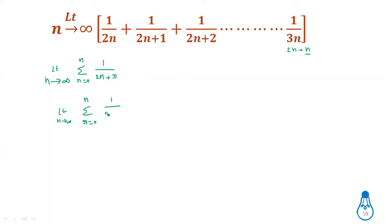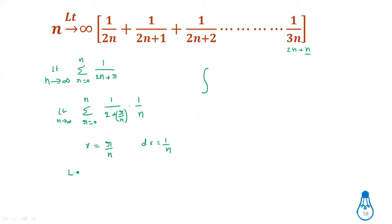Taking n common: 1 divided by (2 + r/n) into 1/n. Using the standard procedure, substitute x = r/n and dx = 1/n. For the integration lower limit, substitute r = 0, so lower limit value is 0.